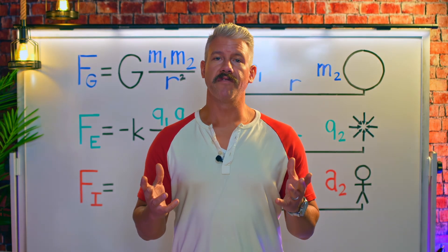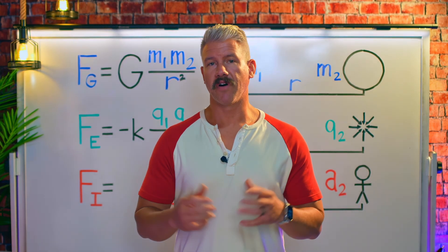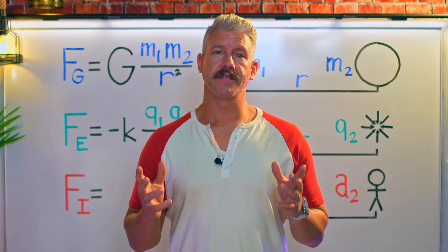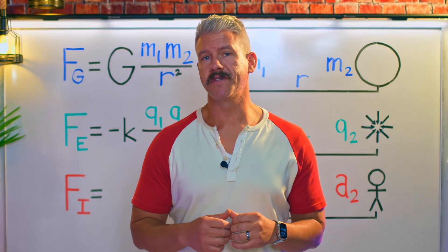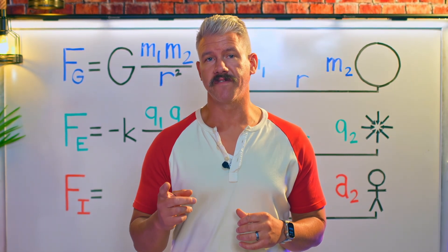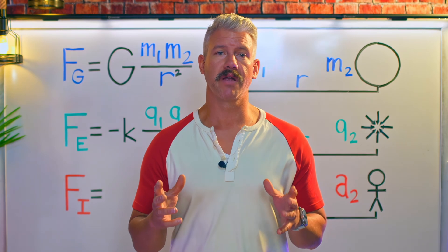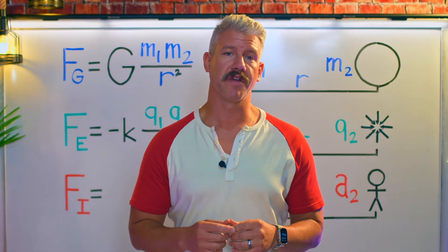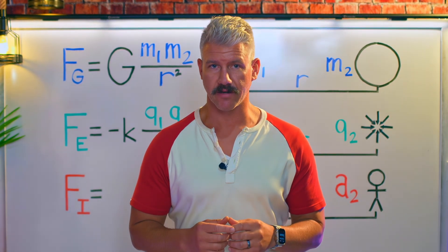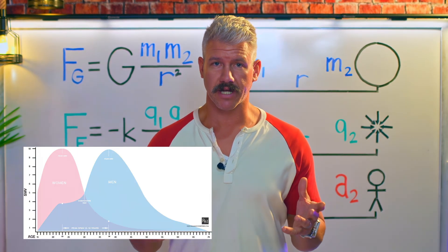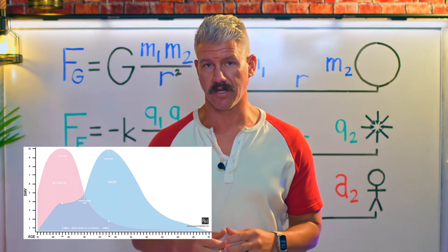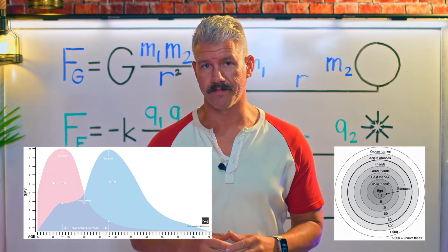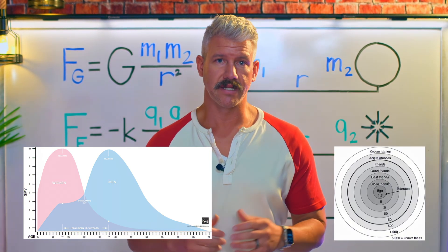What if you could determine the amount of influence you have on the people around you? The Newton-Slade Law of Universal Influence proposes that the anthropoidal force of influence experienced between two people is directly proportional to the product of their extrinsic values, such as sociosexual market value, and inversely proportional to the square of the distance between them, akin to Dunbar layers.